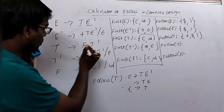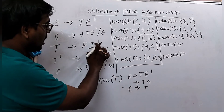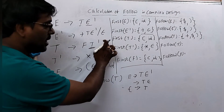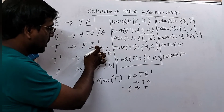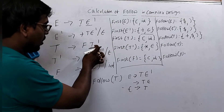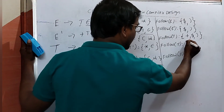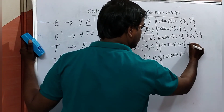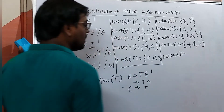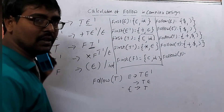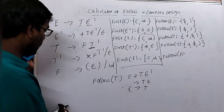FOLLOW of T': T' appears in T → FT'. After T' no symbol is present, so FOLLOW(T') = FOLLOW(T) = {+, $, )}. Understanding the rules carefully makes it very easy to calculate FOLLOW.